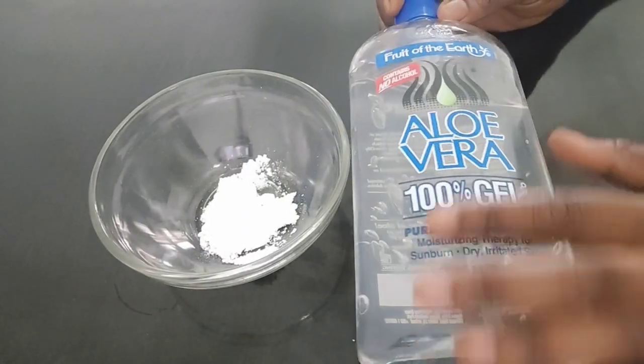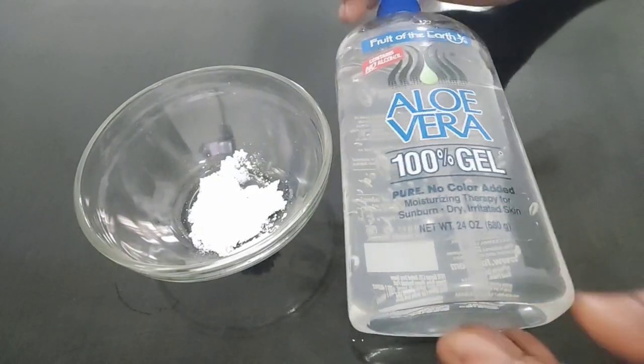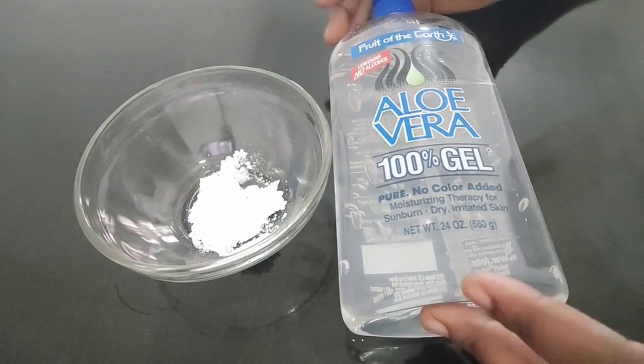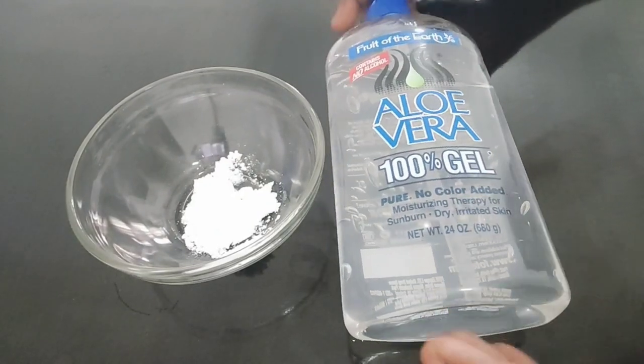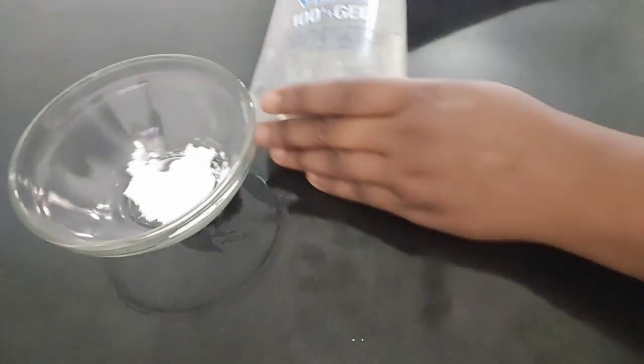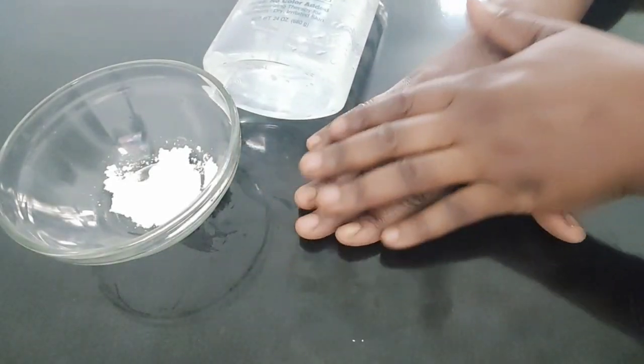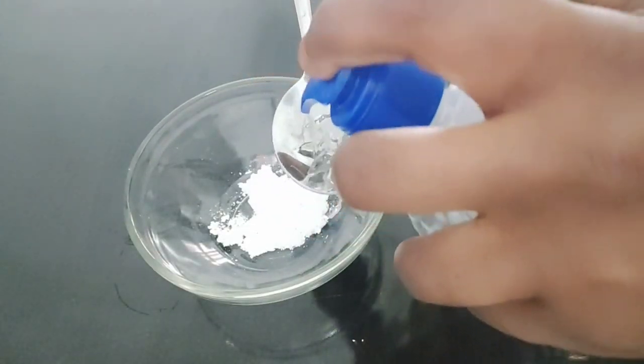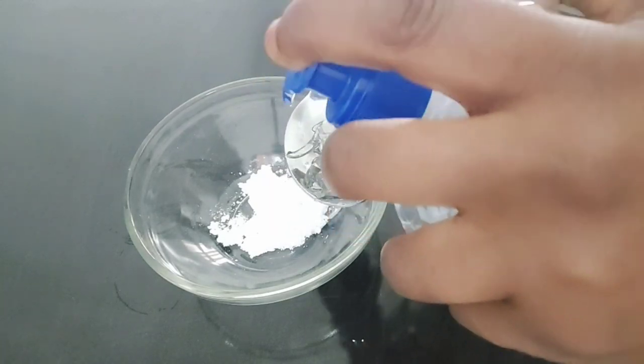My next ingredient here is aloe vera gel. Aloe vera gel is going to soothe your hands, moisturize, hydrate, and remove dryness. It will also help to remove wrinkles, making sure your hands are looking more youthful day by day. I'll squeeze in one tablespoon.